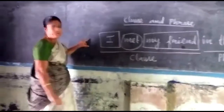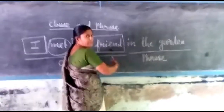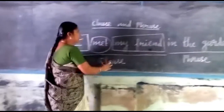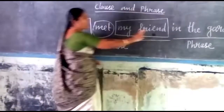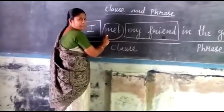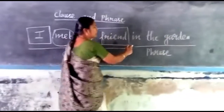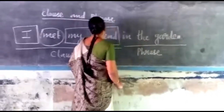A clause means a group of words. Here it is a group of words. A phrase is also a group of words. Then what is the difference between clause and phrase? A clause has a finite verb. A phrase does not have a finite verb. See the sentence here — 'met' is a finite verb. Here, in the phrase, there is no verb at all.